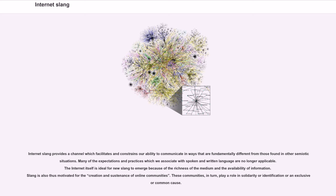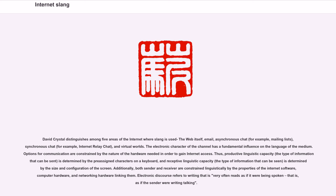These communities play a role in solidarity, identification, or an exclusive or common cause. David Crystal distinguishes among five areas of the Internet where slang is used: the web itself, email, asynchronous chat (for example, mailing lists), synchronous chat (for example, internet relay chat), and virtual worlds.